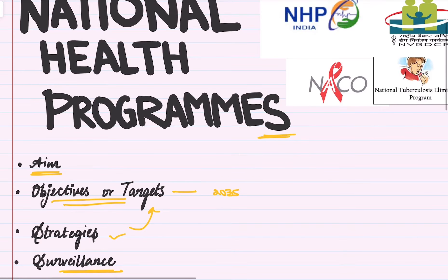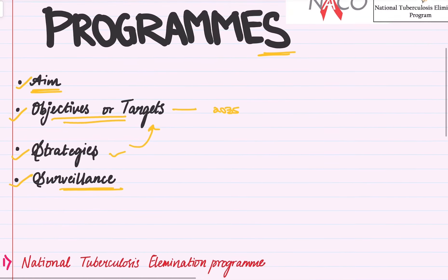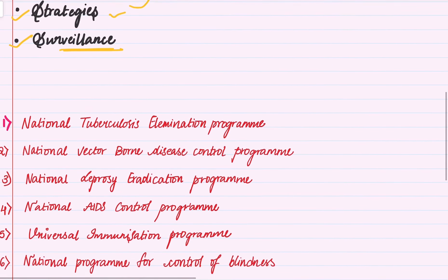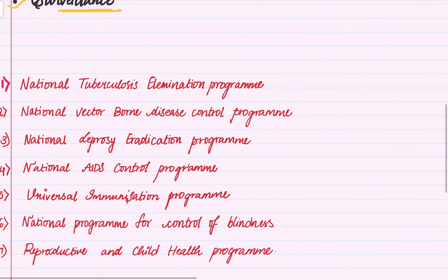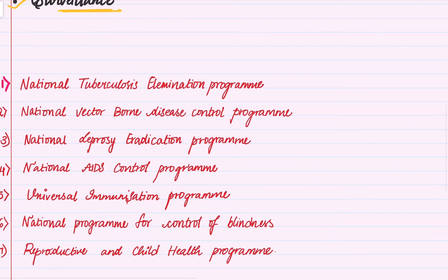So every national health program has these four main subheadings: aim, objectives, strategies, and surveillance. In the further videos I'll be discussing the main national health programs, starting with the National Tuberculosis Elimination Program — the NTEP, earlier known as NTCP, the National Tuberculosis Control Program.